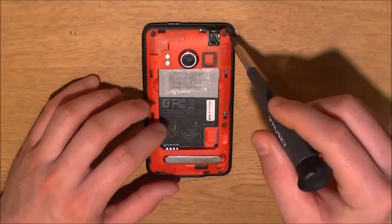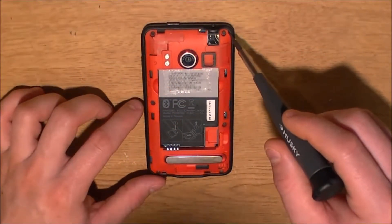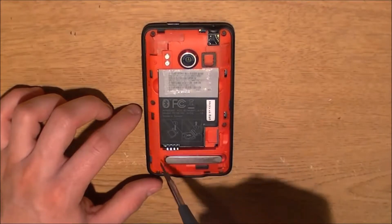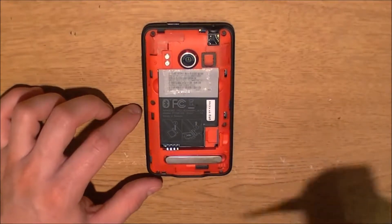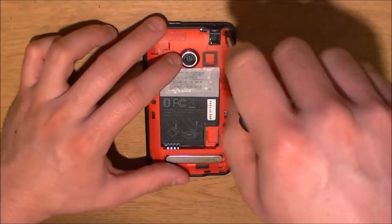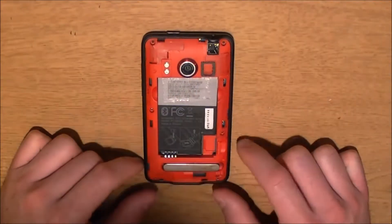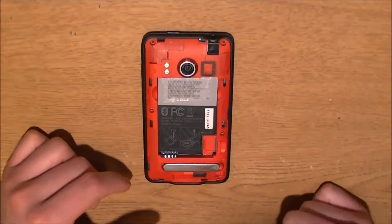You're going to take out all four of these screws. Actually, let's see here. We've got one, two, three, four, five, and six. So, six screws. We've removed all six screws on the HTC Evo.